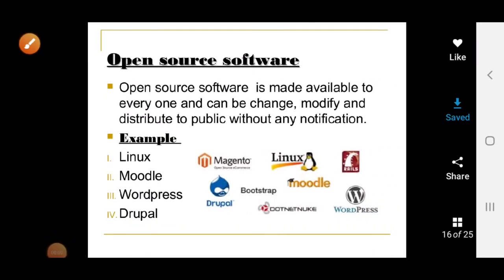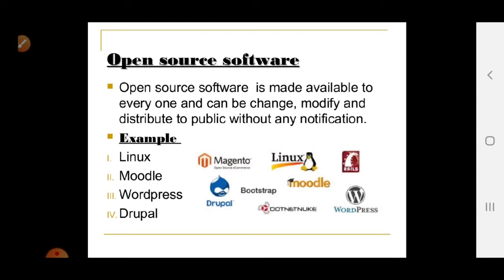Open source software is made available to everyone and can be changed, modified, and distributed to the public without any notification. Once downloaded, it is free of cost — you can make changes to it and maintain those changes without needing to notify the owner.